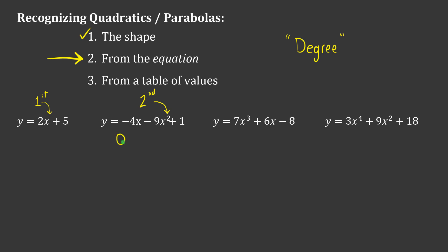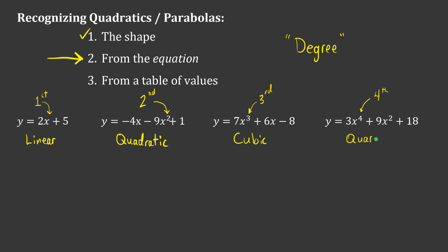That second-degree equation is a quadratic because there is an x squared and that is the highest exponent. The first equation with just x is linear — we've seen this, mx plus b. Over here we have a third-degree equation, which is actually called a cubic. So not a quadratic, not a linear. And then there's a fourth-degree equation called a quartic, which we don't deal with too much — maybe at a university-level math course.